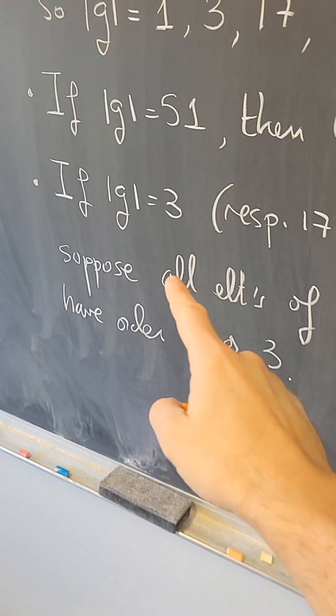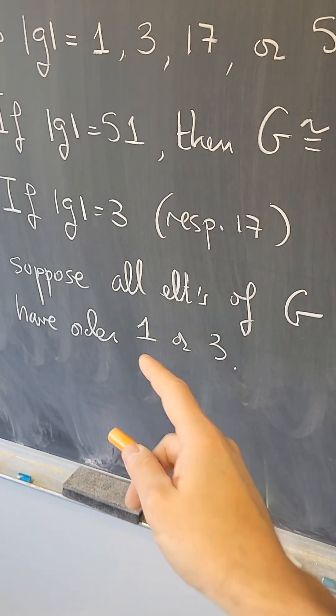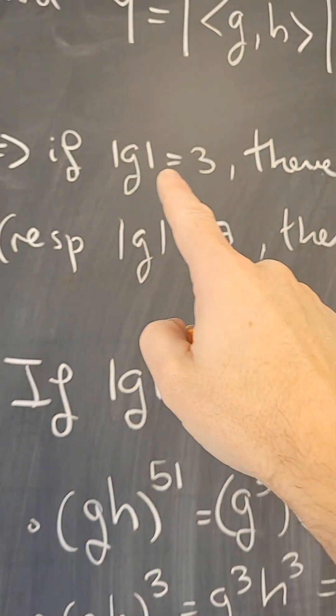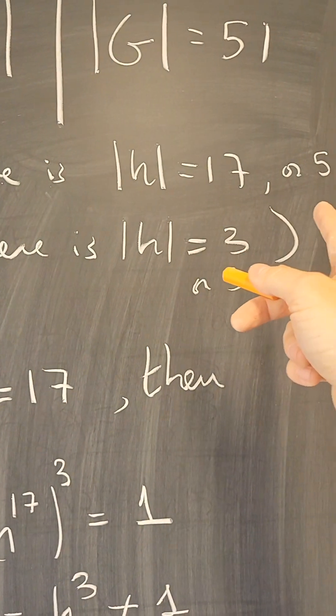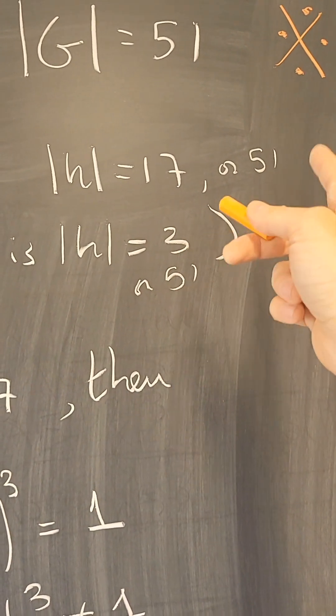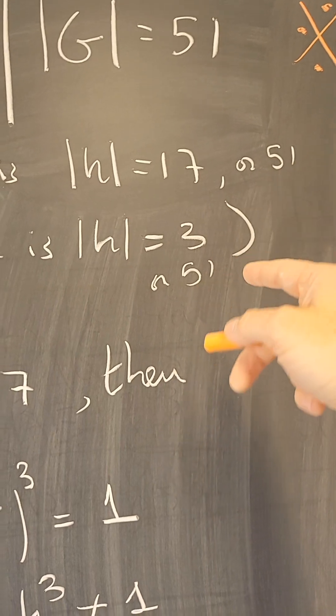A contradiction with what? With the fact that we assumed that every element had order 1 or 3. So there must be that if g has order 3, there has to be an element of order 17 or 51. If it's of order 51, then we're done.